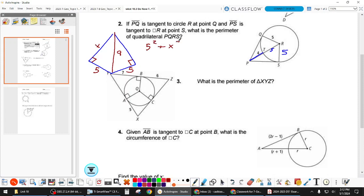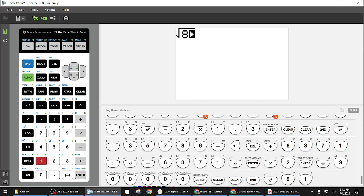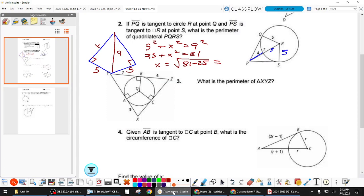So it says perimeter. So really I just need these two lengths, but they're the same, so let's just find one of them. So 5 squared plus x squared equals 9 squared. Actually, let's, can we just agree that to get rid of a squared we square root? So 81 minus 25 square rooted. Okay, so our perimeter is just 7.5, 7.5, 5, and 5. So 25.